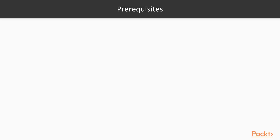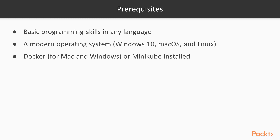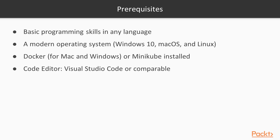Here are some prerequisites. First up, you need basic programming skills in any language. You need a modern operating system such as Windows 10, macOS, or Linux. If you plan to run everything locally, you definitely need decent hardware with 16 gigabytes of RAM and a quad-core CPU. You will also need Docker for Mac or Windows, or Minikube installed. If you do not have this, it's okay to use AWS, Azure, or GCP at Google to deploy all the examples. You'll also need a code editor such as Visual Studio Code or any comparable, and a terminal or shell.